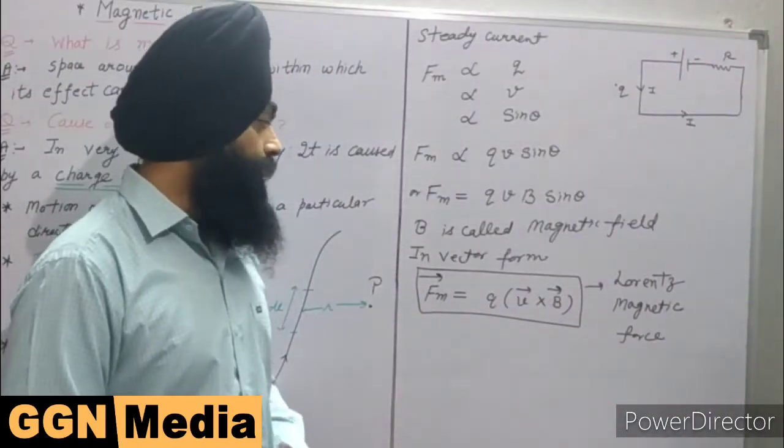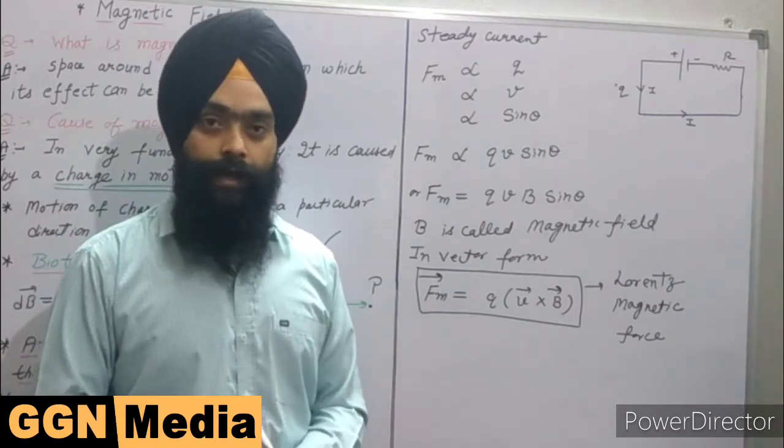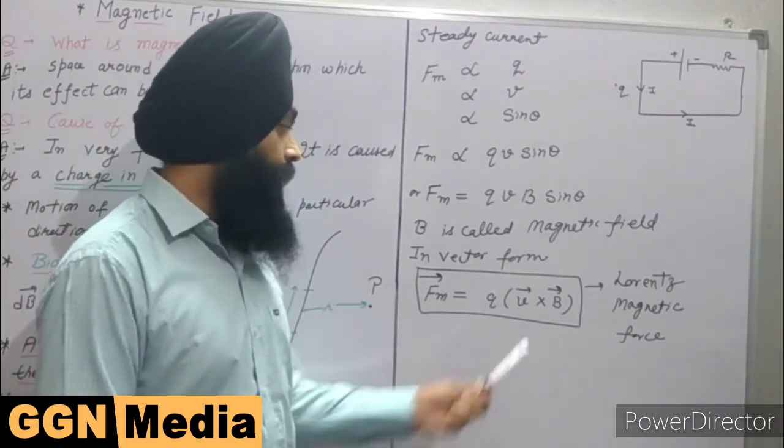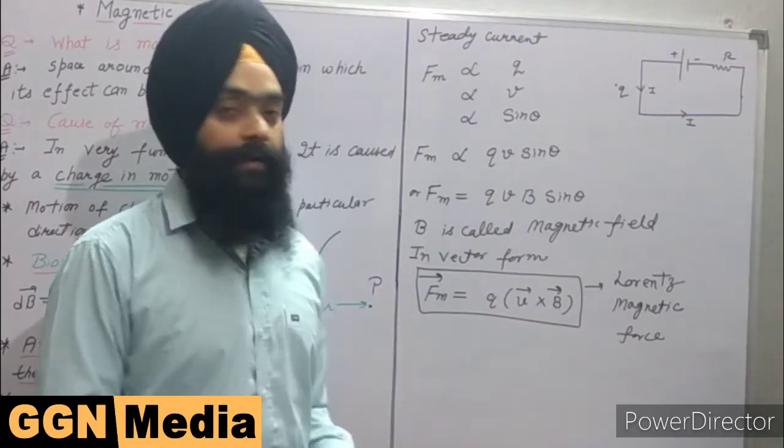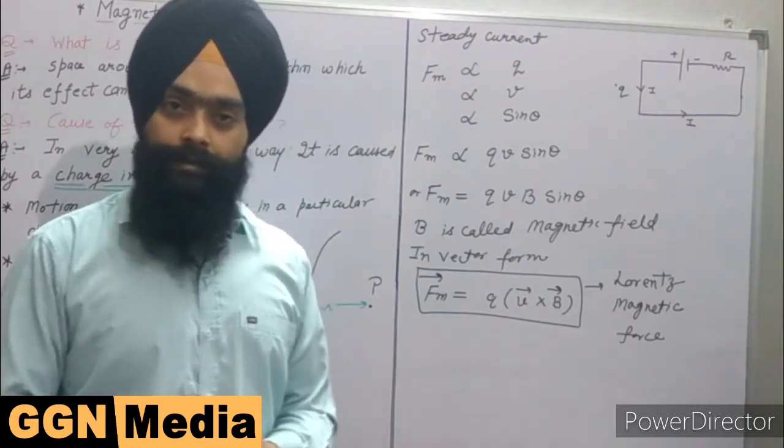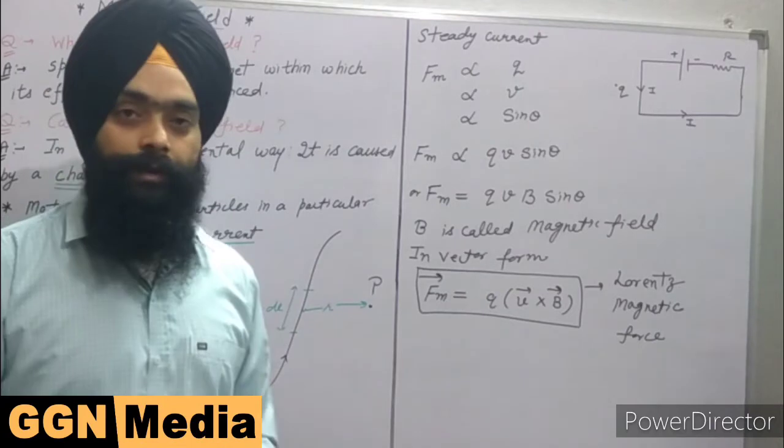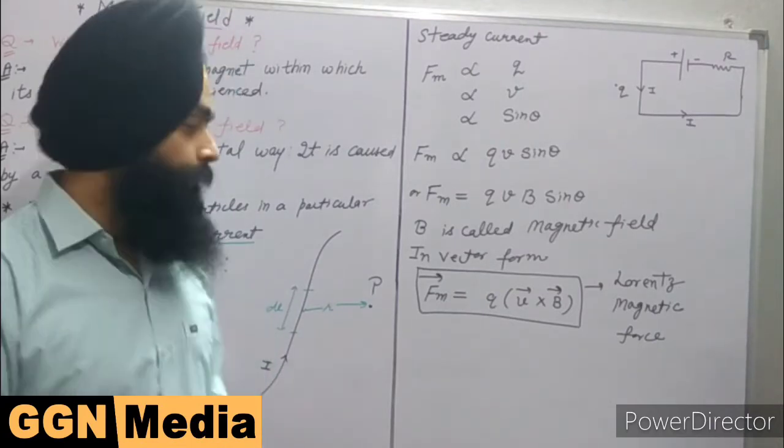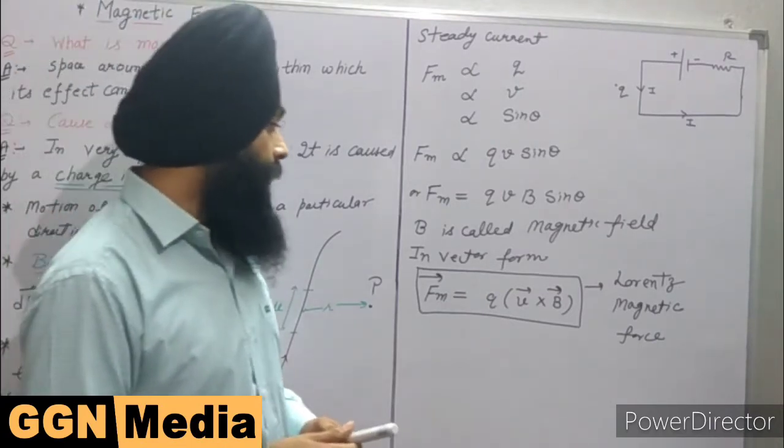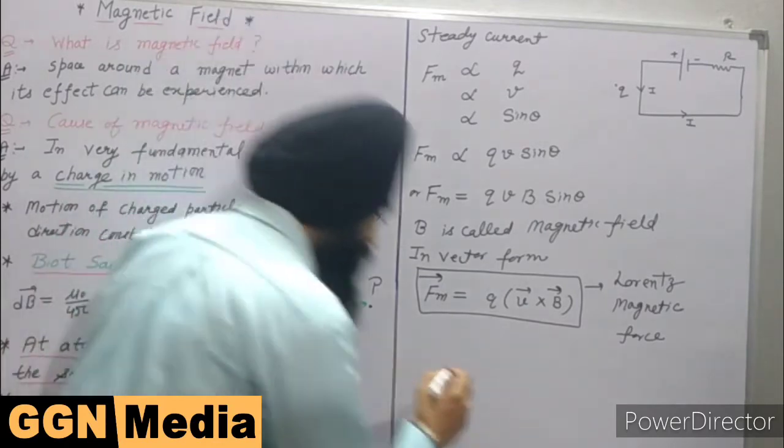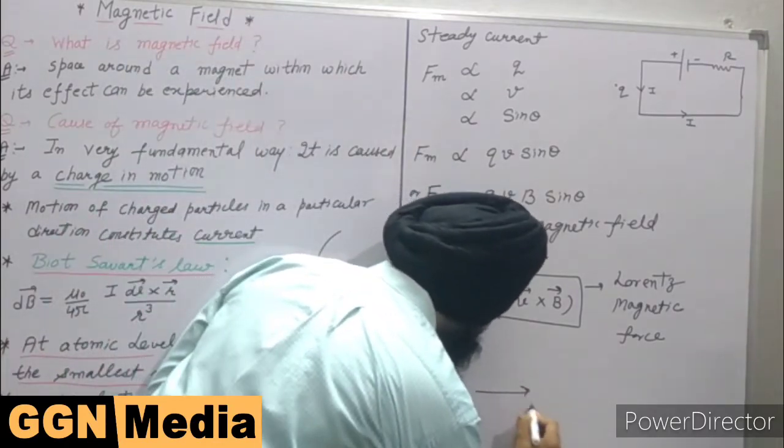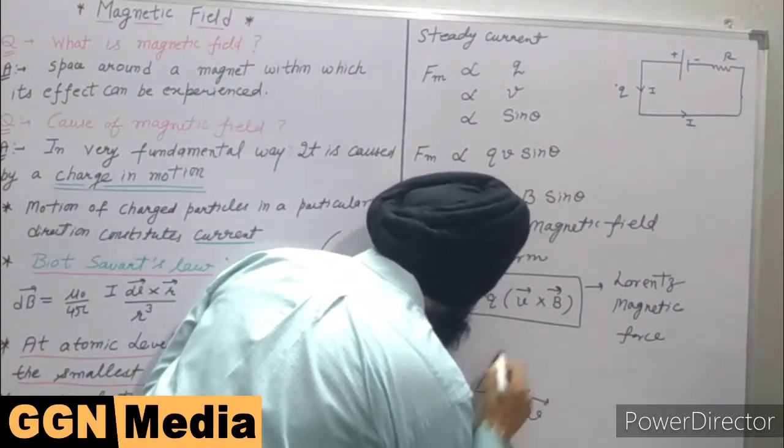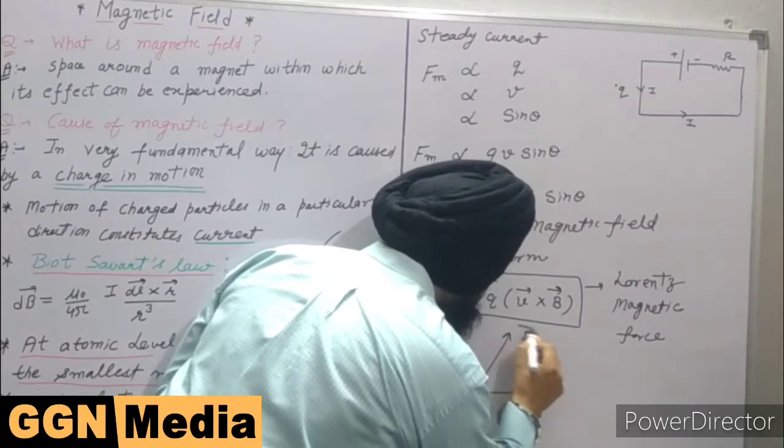This magnetic force is a vector quantity whose direction depends upon the direction of velocity v and magnetic field B. The direction can simply be identified using the right-hand thumb rule. The right-hand thumb rule says that if velocity v is directed along this direction and vector B is directed along this direction,